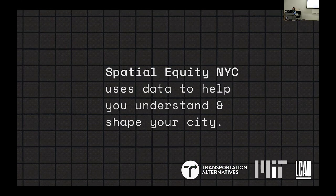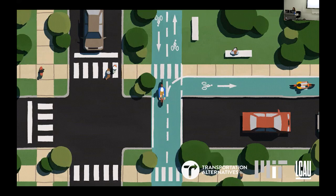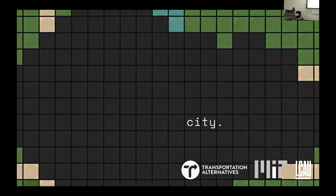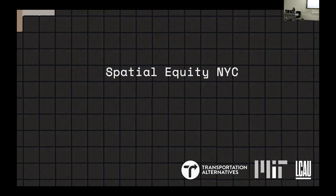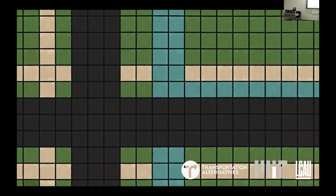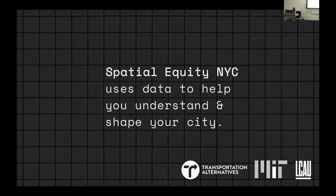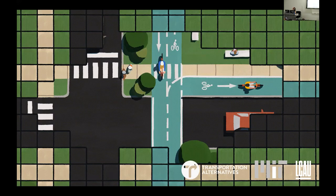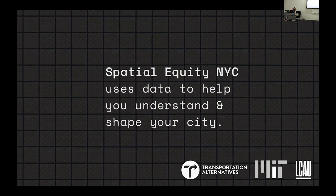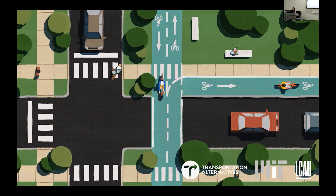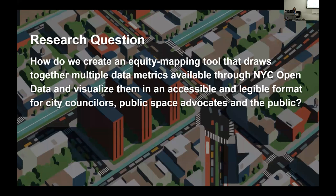What I'm really trying to do is bring open data to policy makers at large and visualize data on human mobility, urban health, environment, and correlated demographics to reveal inequities and how they are spatially distributed across the city. The tool stands out from many similar tools in that the data is aggregated at the council district level, rather than at the census tract or zip code level. Our question was: how do we create an equity mapping tool that draws together multiple data metrics available through NYC's open data and visualizes them in an accessible and legible format?